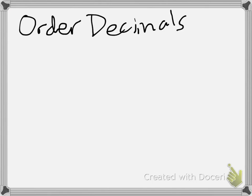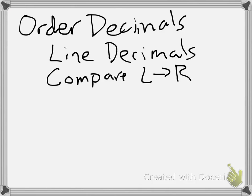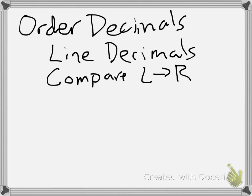So let's take a look at the process for what we need to do. It's pretty simple. The first thing we have to do is line up any decimals that we have, which helps keep the place values in their proper spot. The second thing is to compare from left to right. I use that word compare because I might sometimes be asked to go greatest to least, least to greatest, or find which ones are the same.